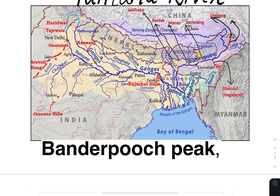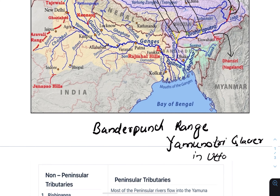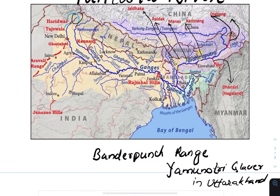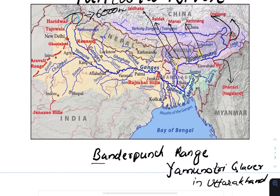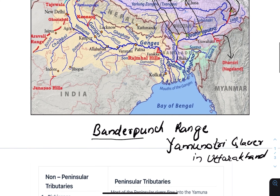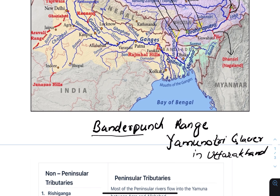It originates in Bandirpunch, at the Yamunetri glacier in the Garhwal region of Uttarakhand, at an elevation of almost 6000 meters. The river Tones also originates from Bandirpunch. Yamuna then flows across the Nag Tibba, the Mussoorie, and the Shivalik ranges and then enters the plain region.